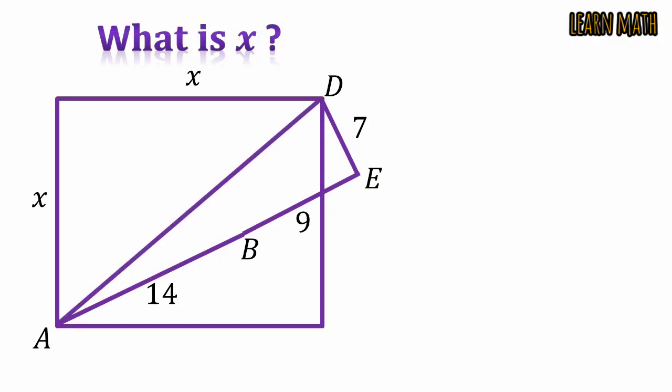So AED is a right angle triangle. In this right angle triangle AE is equal to AB plus BE.